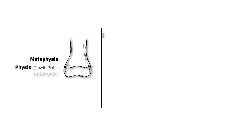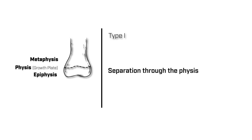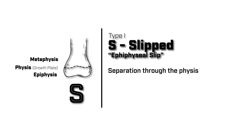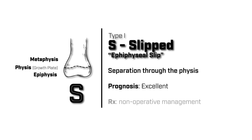A type 1 Salter-Harris fracture is a separation through the physis, or growth plate. Typically, it's a separation through the epiphysis and physial elements from the metaphysis. The way to remember this is the S portion of Salter, which stands for slipped. Prognosis for this type of fracture is excellent, and management is often non-operative.